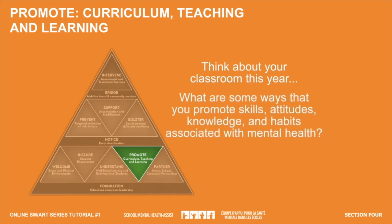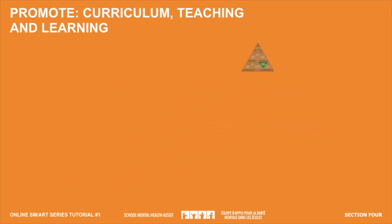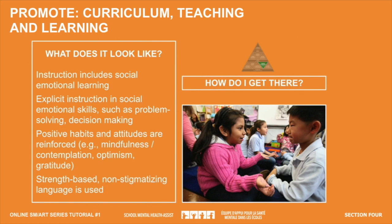Think about your classroom this year — what are some ways that you promote skills, attitudes, knowledge, and habits associated with mental health? Here are a few practical everyday strategies: notice and reinforce students for using social-emotional skills like help-seeking, goal-setting, and conflict resolution; use calming activities when energy levels are too high for optimal learning, such as a glitter jar activity or mindfulness moment; explicitly teach time management and study skills; and model optimism, coping skills, and resilience in the face of obstacles and adversity.